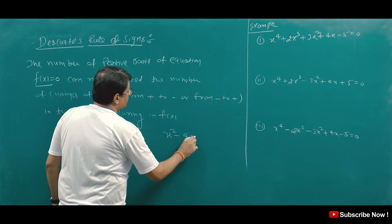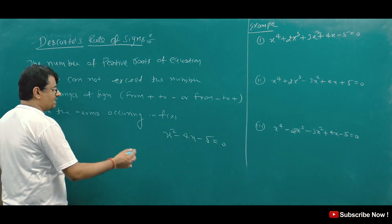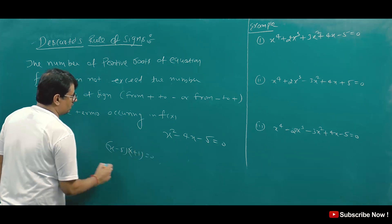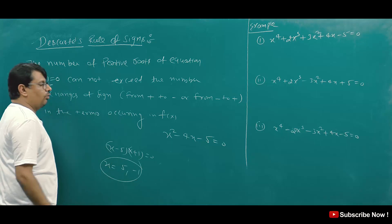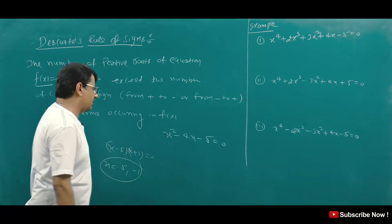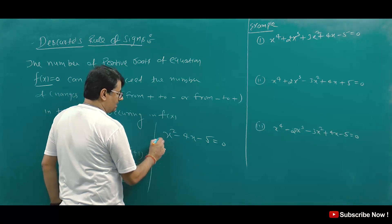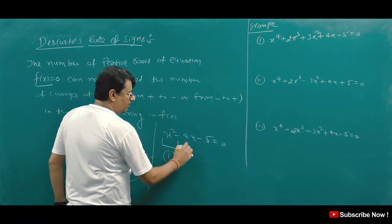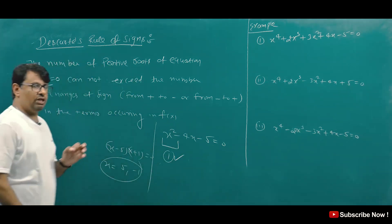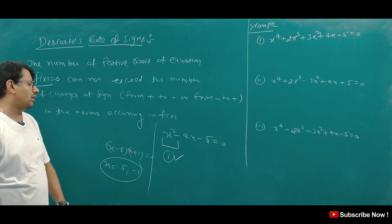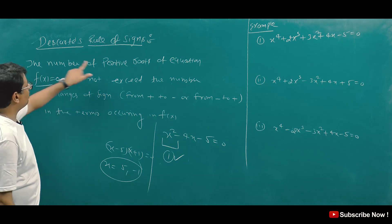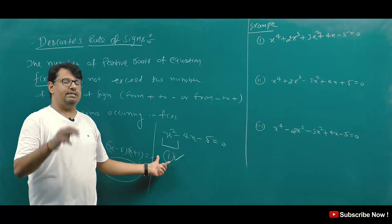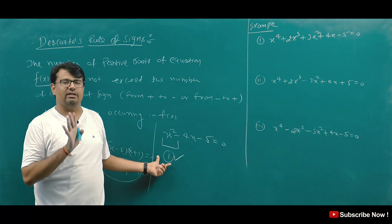It means that for any equation, if there is one sign change, the number of positive real roots will be 1. The number of positive roots of the equation cannot exceed the number of sign changes. So if there is one sign change, the positive roots cannot be more than 1.